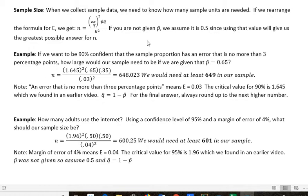Okay, here we go. If we want to be 90% confident that the sample proportion has an error that is no more than 3 percentage points, how large would our sample need to be if we were given that p hat is 0.65? Okay, so we're going to just use that formula.